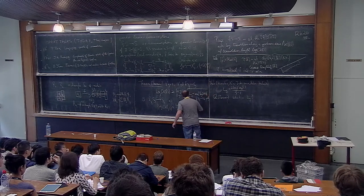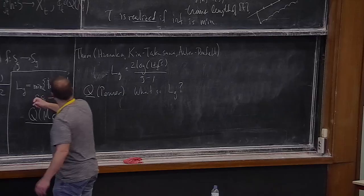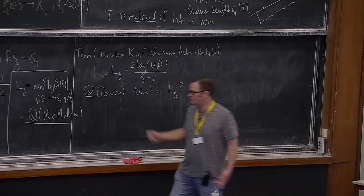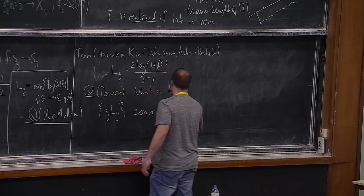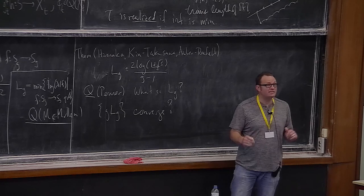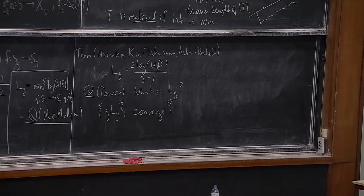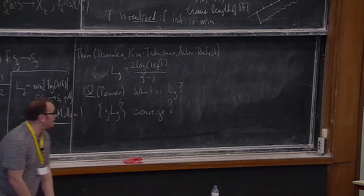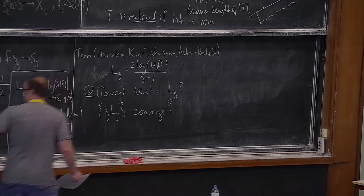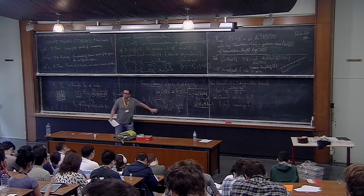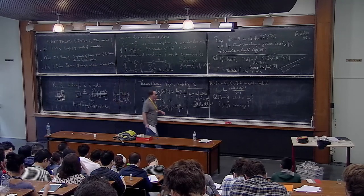Another open question due to McMullen: since L_g is of order 1/g, if you multiply by g, does g·L_g converge? It's bounded above and below by positive constants, but whether it actually converges is unknown.